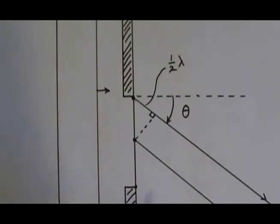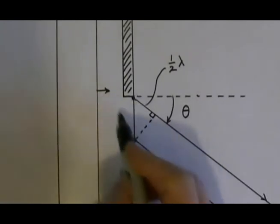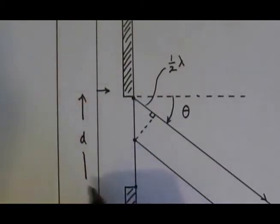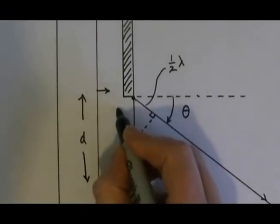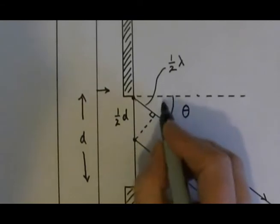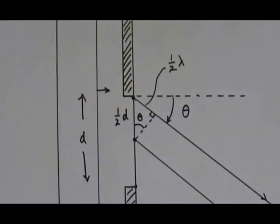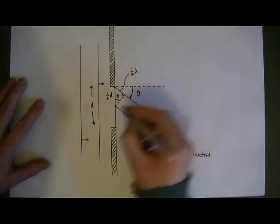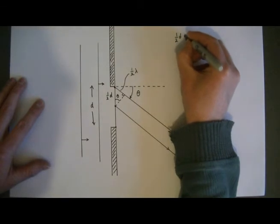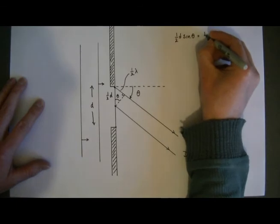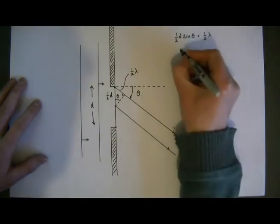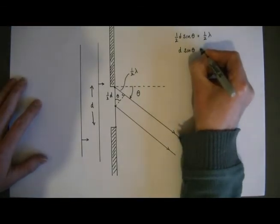So if I fill in what I know about this triangle — I know the gap width is d, so this side here is d, which means this distance here must be half d. And this angle here must be theta. Using what I know about right-angled triangles, I can say that half d times the sine of theta equals half the wavelength. Multiplying through by 2 gives the simple equation: d sin θ = λ.